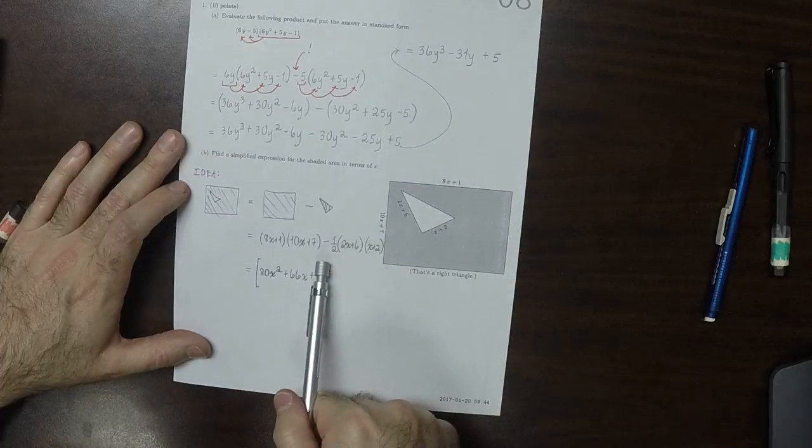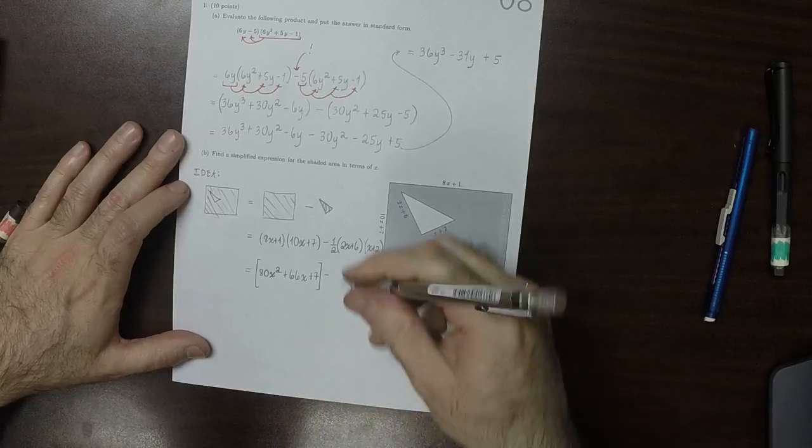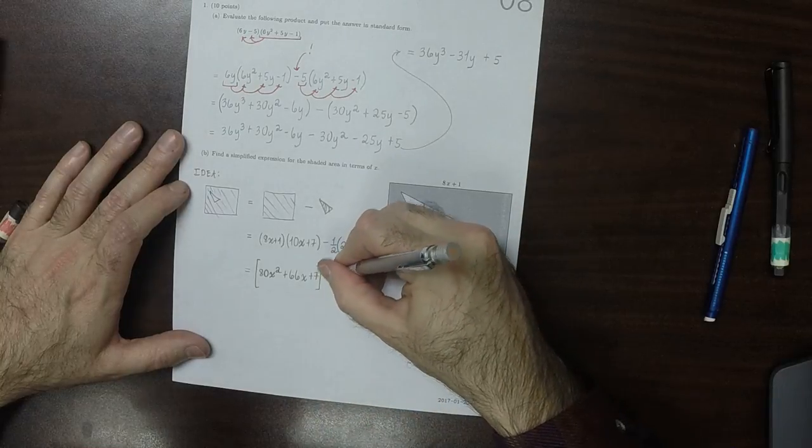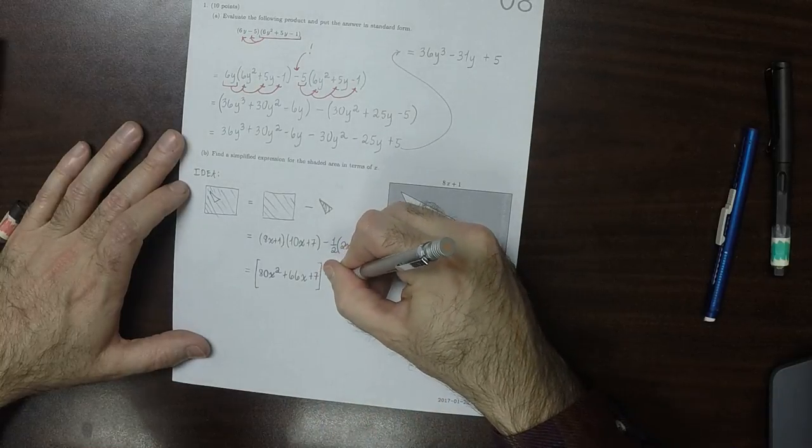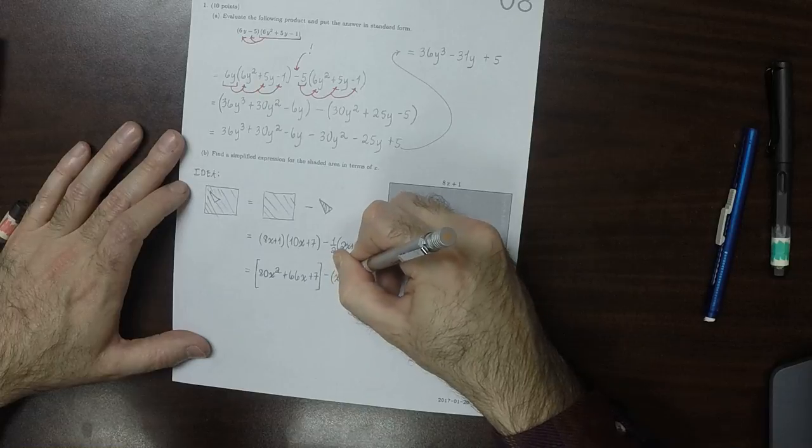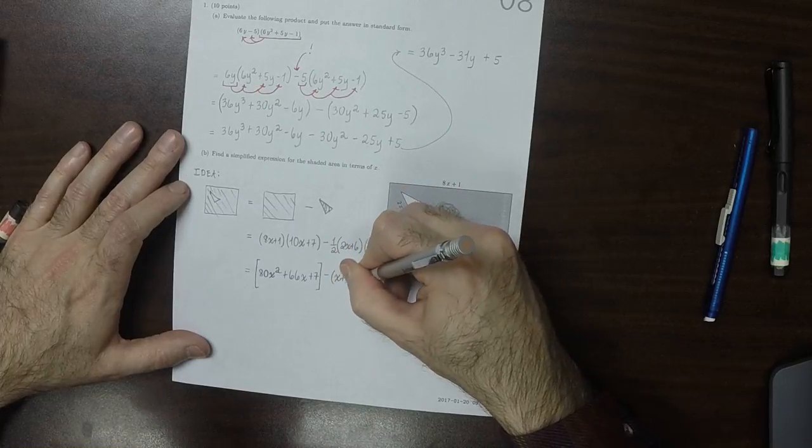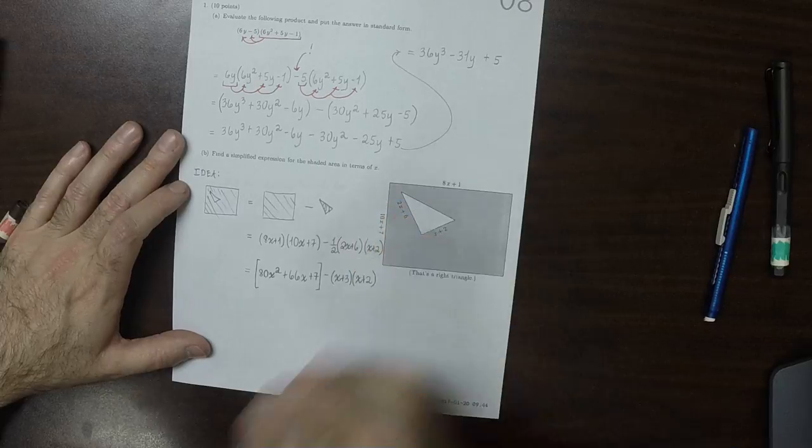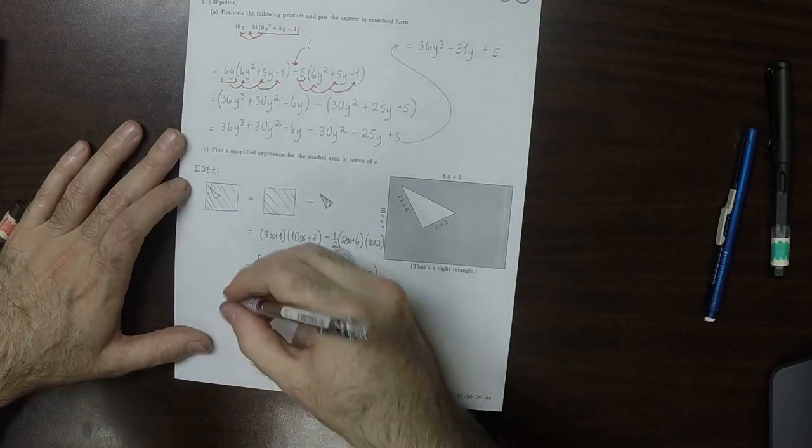Minus, I'll distribute the half in and get x plus 3 multiplied by x plus 2.